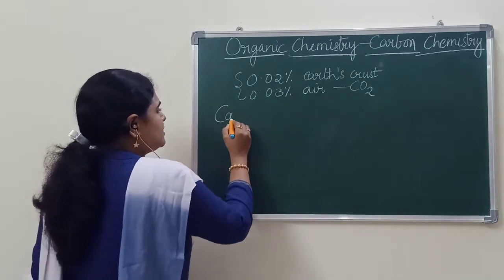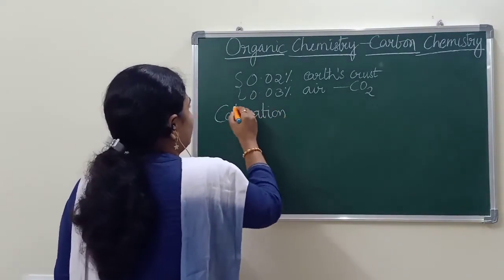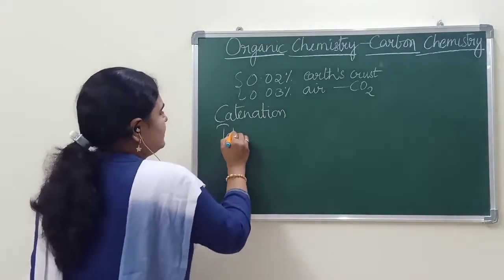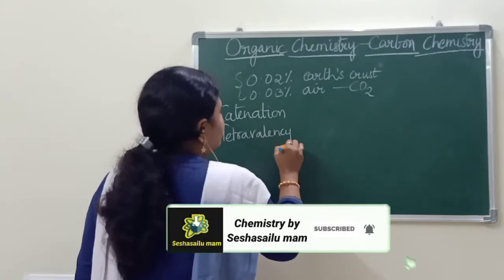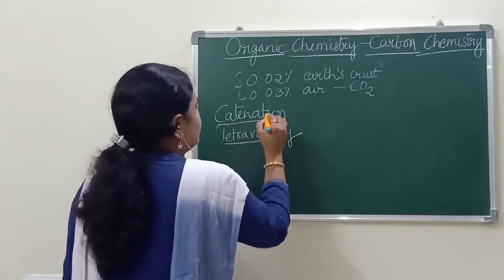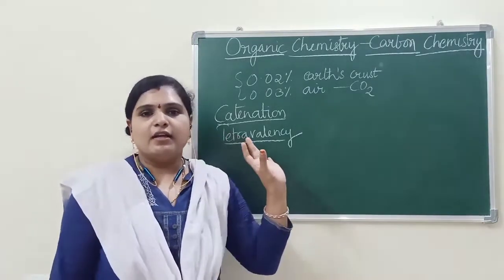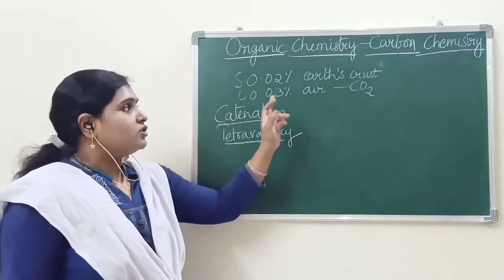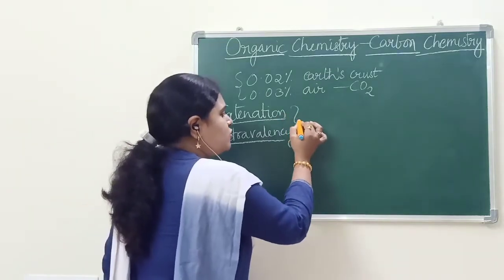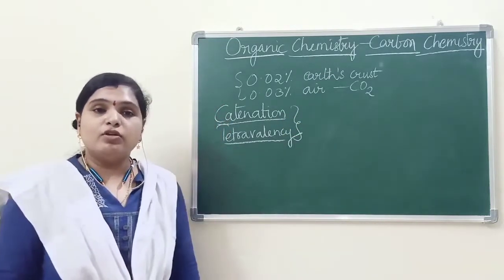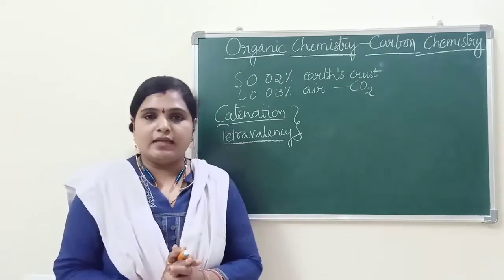What is the feature that is favoring? Two features: catenation and tetravalency. These two features are very important in consideration to carbon. Because of these two properties only, it is able to form so many compounds. And what is this catenation?